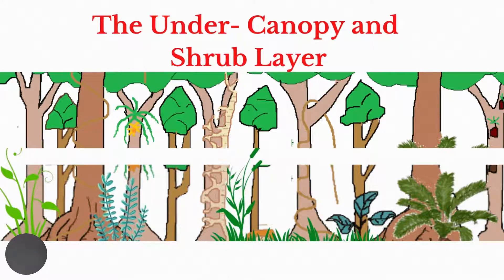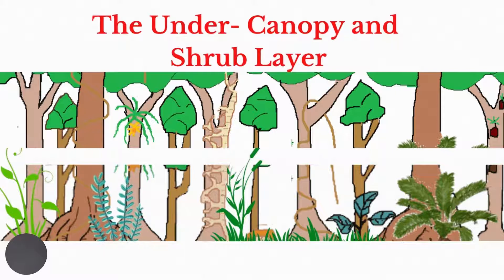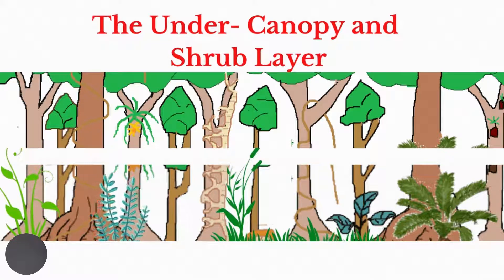The under canopy layer, also called the understory layer, is often combined with the shrub layer in most classifications. Here there is less light and less wind, and the air is more humid. The crowns of the trees in the understory layer are oval shaped and grow in gaps where sunlight filters through. The plants in these layers are shorter and have larger leaves than those in the canopy layer, making it easier to catch the sunlight which filters through the canopy.